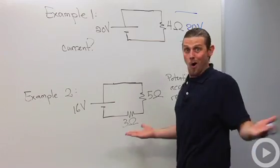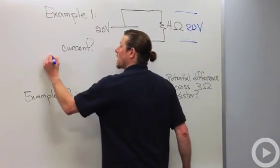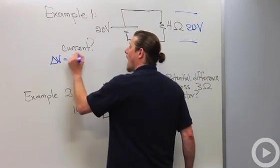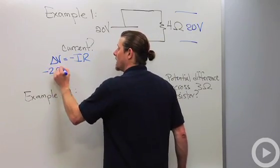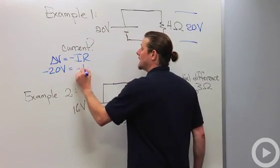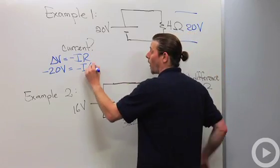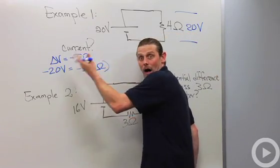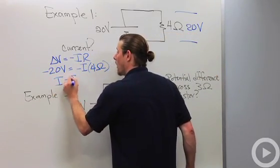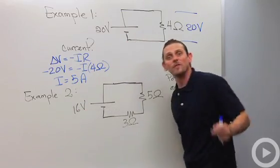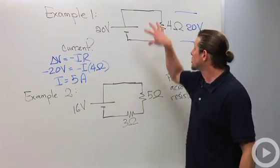Now it's time for Ohm's law. So we'll say delta V equals minus IR. Potential difference negative 20 volts equals minus I times what is it, 4 ohms. Divide and we're done. I equals 5 amps. So we've got 5 amps of current that's going through this circuit.